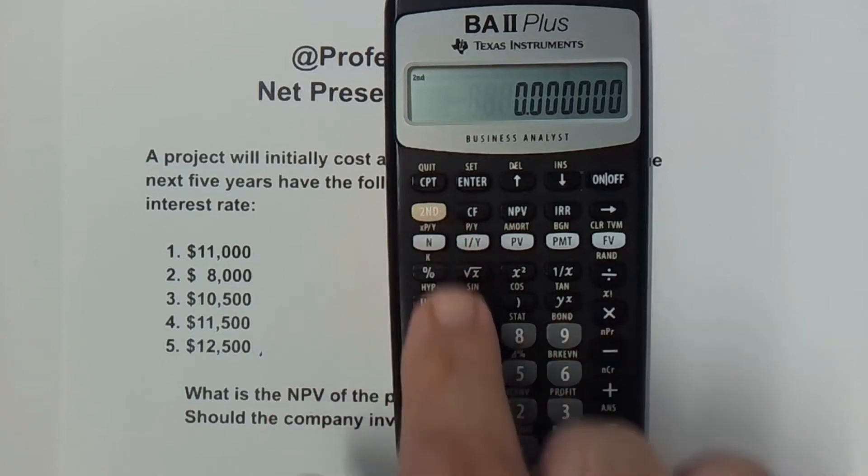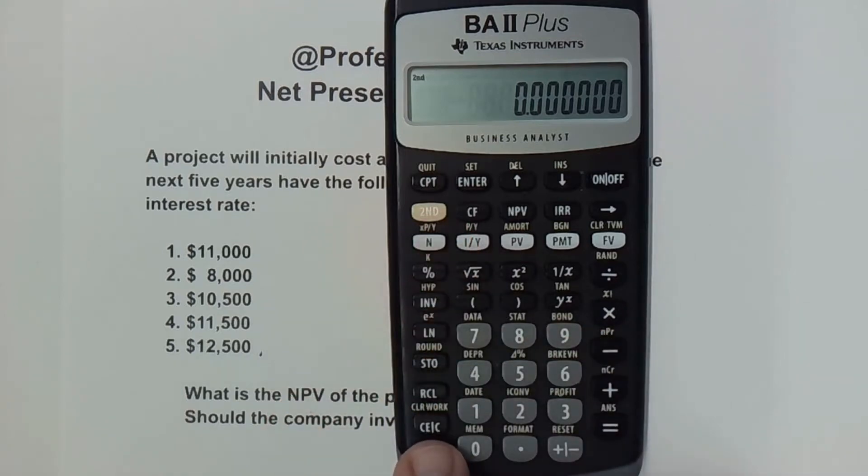And I hit the second button again, and I come down to the CE slash C button. And right above that, it says clear work. So I'm going to hit that.